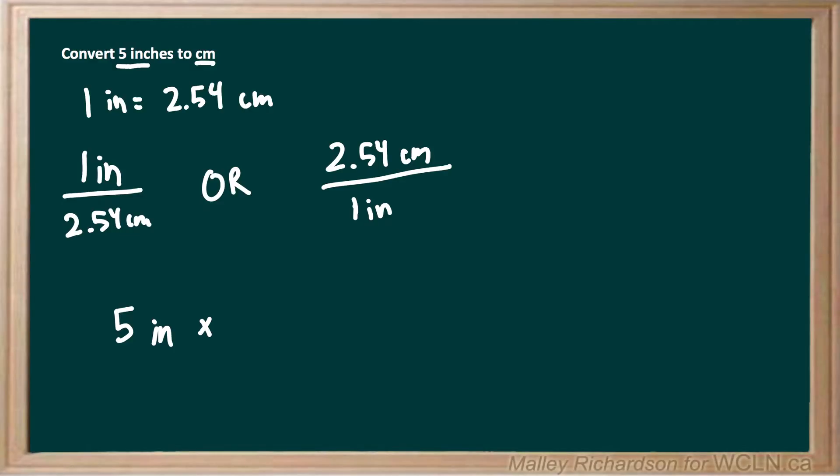So that will be our second conversion factor of 2.54 centimeters over 1 inch. So we'll multiply 5 inches by 2.54 centimeters over 1 inch.